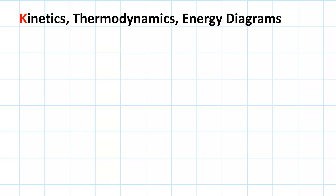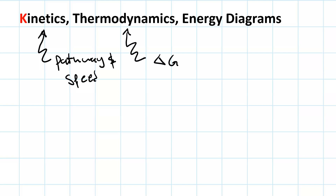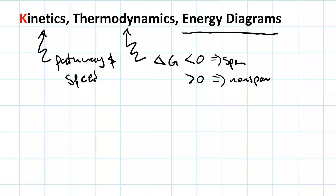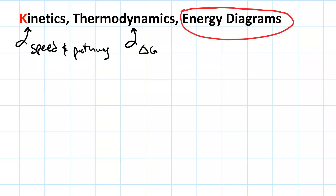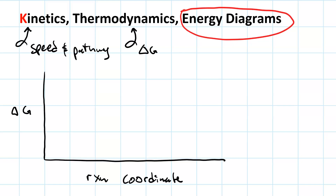Kinetics, thermodynamics, and energy diagrams: kinetics refers to the pathway and speed of a reaction; thermodynamics refers to Delta G — if it is negative then it's a spontaneous reaction, if it is positive it is non-spontaneous. Energy diagrams are the way we can represent all of this. An energy diagram, also known as a reaction coordinate diagram, has Delta G on the y-axis and reaction coordinate on the x-axis.